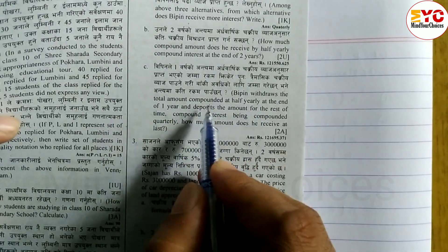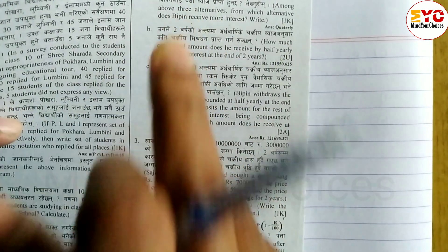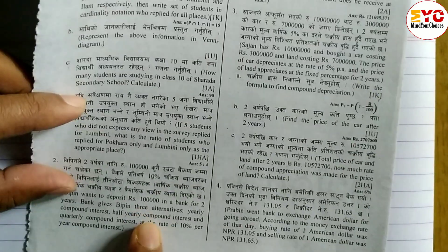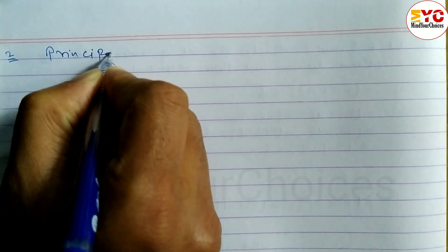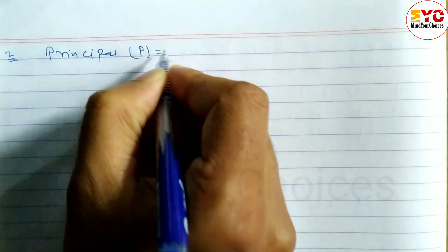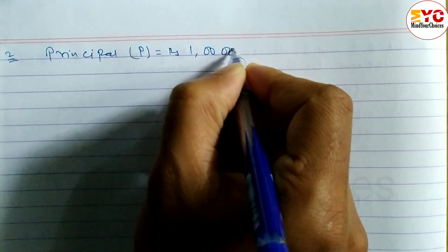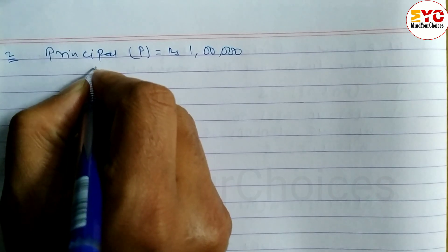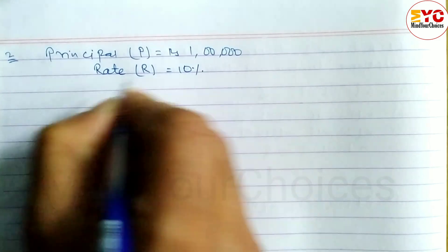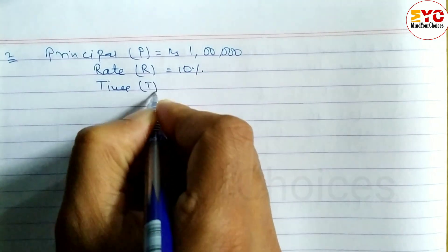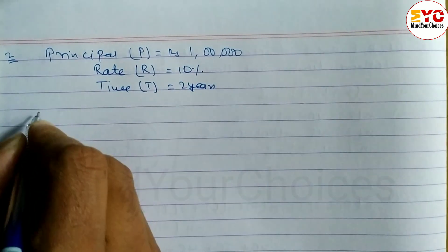Let's do it. The principal P is equal to Rs. 1 lakh. The rate of interest r is equal to 10%, and time t is equal to 2 years.